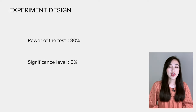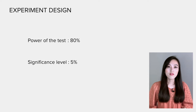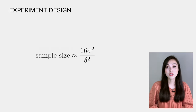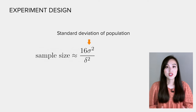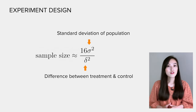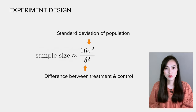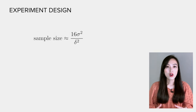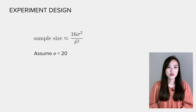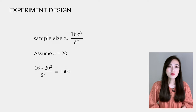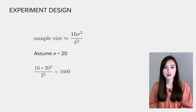With power and alpha, we apply the formula: 16 multiplied by sigma squared divided by delta squared, where sigma is the standard deviation of the population and delta is the difference between treatment and control. If you need a refresher on how to derive this formula, check out that linked video. Assuming sigma is 20 for this example, the sample size works out to 1600 users.